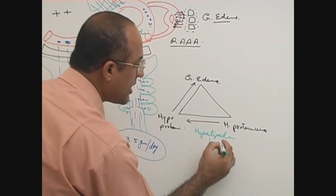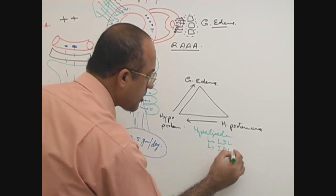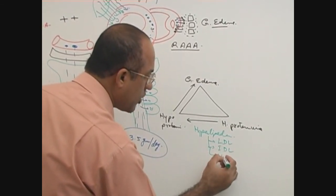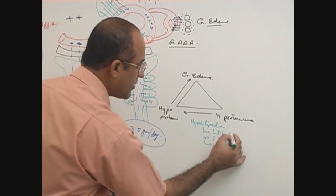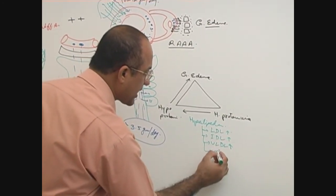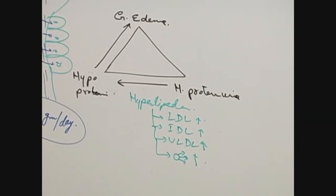Which lipids will go up? LDL will go up. Intermediate density lipoproteins will go up. VLDL will go up. Triglycerides will not be cleared. They will be going up. Do you think these are good news for the patient? No.